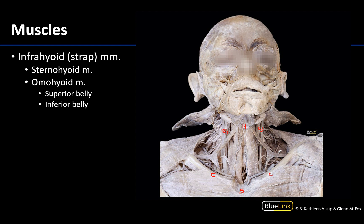There are two groups of infrahyoid muscles: superficial and deep. We are looking at a dissection of the superficial infrahyoid muscles. The most medial is going to be the sternohyoid, which I am tracing here. The sternohyoid is going to be longer than the two deeper infrahyoid muscles, as it extends between the sternum all the way up to the hyoid bone — you would have to reflect or move this muscle in order to see those deeper infrahyoid muscles.